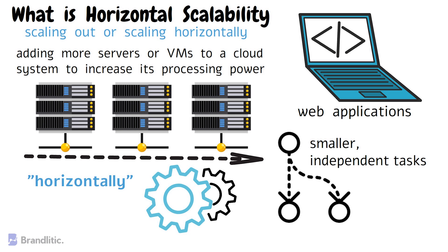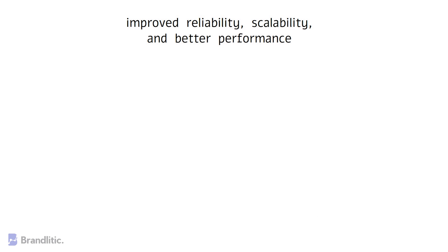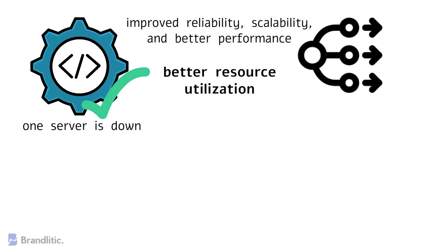The benefits of horizontal scaling include improved reliability, scalability, and better performance. This approach enables the system to continue functioning even when one server is down, ensuring that application remains available. Additionally, horizontal scaling allows for better resource utilization, as the workload can be distributed across multiple servers.